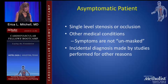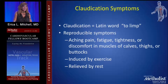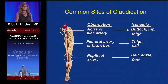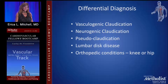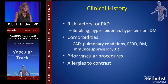Patients can be asymptomatic because they have other comorbidities that prevent them from challenging their vascular system enough to elicit claudication symptoms. Symptoms of claudication occur one level below where you have a lesion. The differential diagnosis includes vasculogenic claudication, neurogenic pseudoclaudication, lumbar disc disease, and other conditions. It's also important to document risk factors, comorbidities, and contrast allergies, as these can affect further treatment.